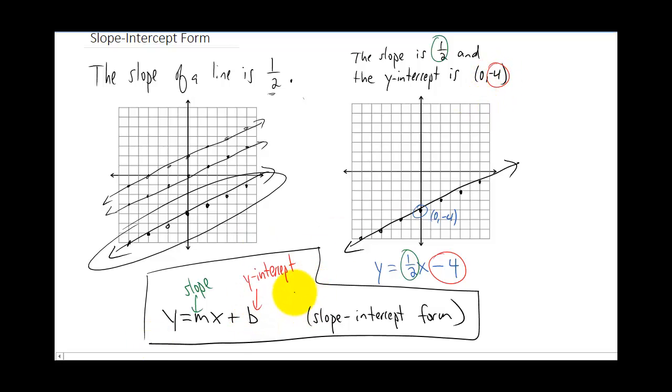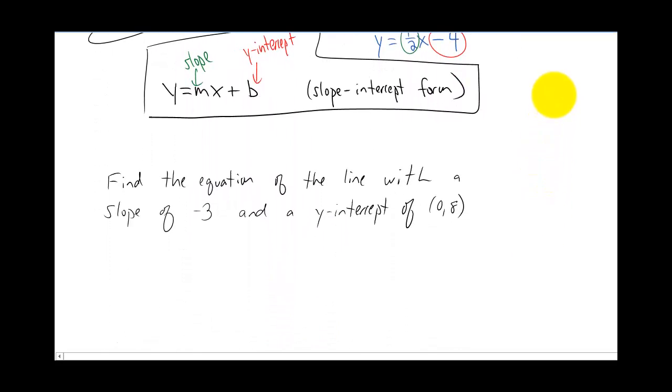Now, you're going to go into a lot more depth about where this equation comes from in class. In this video, we're just going to go through a few more examples using this formula, like this one right here. Find the equation of the line with the slope of negative three and a y-intercept of zero, eight. Hit pause on your browser and see if you can do it.